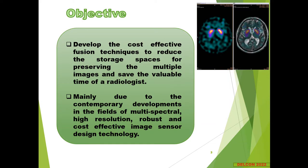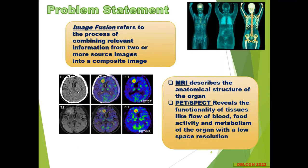Medical image fusion is a process of coalescing multiple images from different sources. Different image sensors produce different types of relevant features, and thus fusion helps to retain large amounts of information in a single image for clinical applicability. In medical diagnosis, various multimodal images are used to obtain significant information of affected organs or tissues. The commonly used modalities are MRI, which can describe the anatomical structure of an organ, and PET or SPECT, which describes the functionality of tissues.